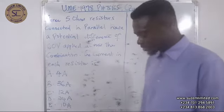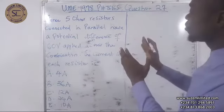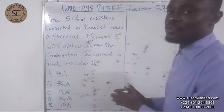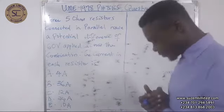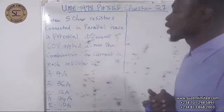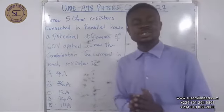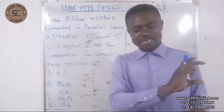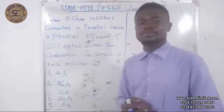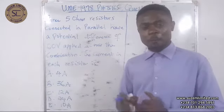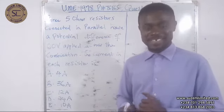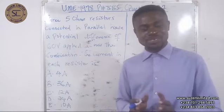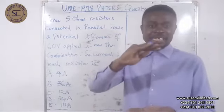Now let us take a look at this question again. This is a case of parallel connection of resistors. In a parallel connection of resistors, the potential difference across each is the same, but the current differs.